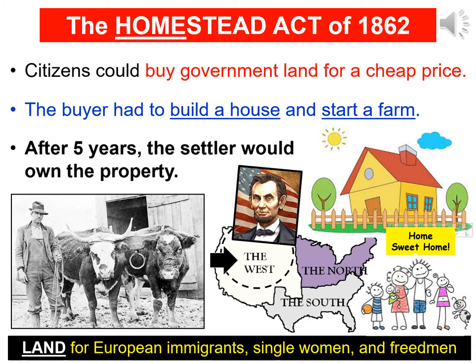The Homestead Act of 1862. The government wanted people to move west, so we go back in time when Abraham Lincoln was president. He worked with Congress and they came up with a program called the Homestead Act. Citizens could buy government land for a really cheap price. If you're the buyer, you'd have to meet some requirements and pay a small fee, but you could get enough land to build your house. Then you'd need to start a farm — those were two requirements to be part of this program.